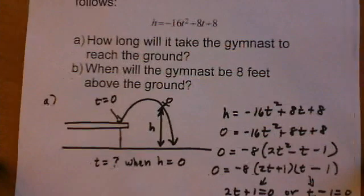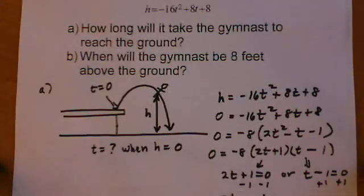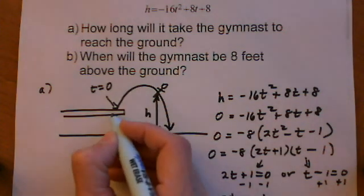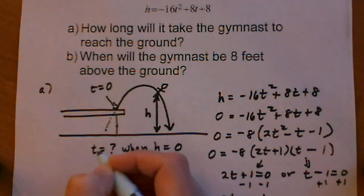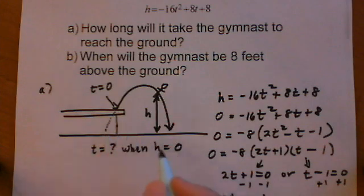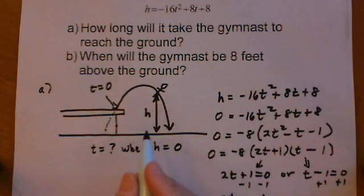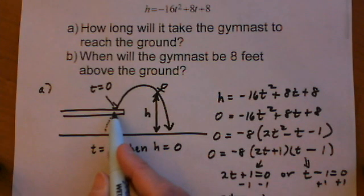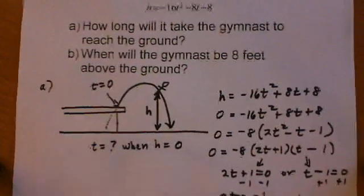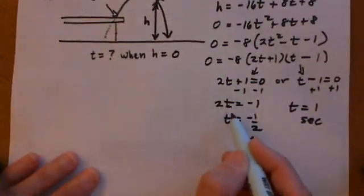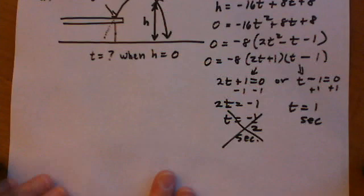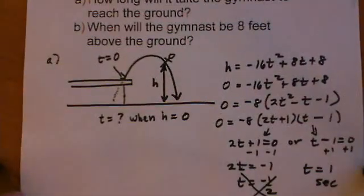That means that this negative time answer we got, negative half second, doesn't make sense with the problem. That would correspond to something before she even jumped. So even though mathematically it makes sense in the equation, it doesn't make sense for what we have happening in our word problem. So I'm going to discard that solution. It doesn't fit reality. And t equals 1 second is okay.